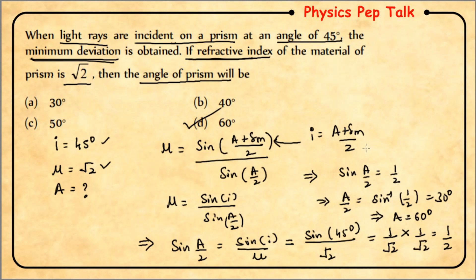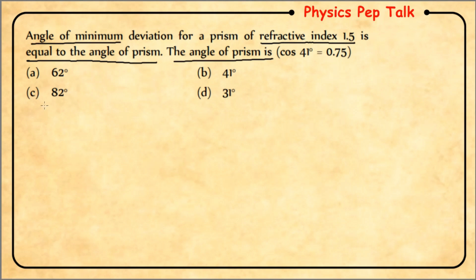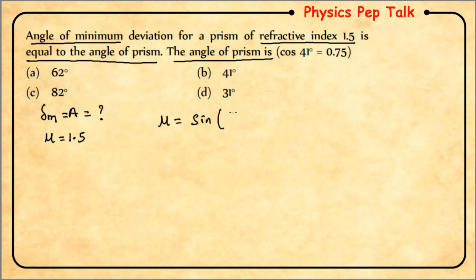Next question: the angle of minimum deviation for a prism of refractive index 1.5 is equal to the angle of the prism. Find the angle of the prism. Given: δm = A and μ = 1.5. Using the formula: μ = sin((A + δm)/2) / sin(A/2).